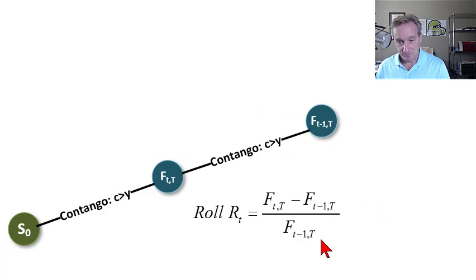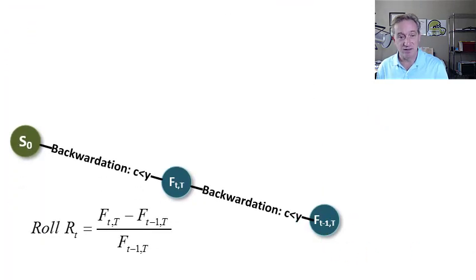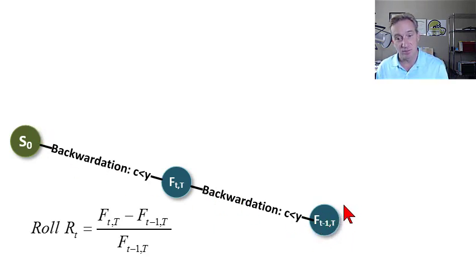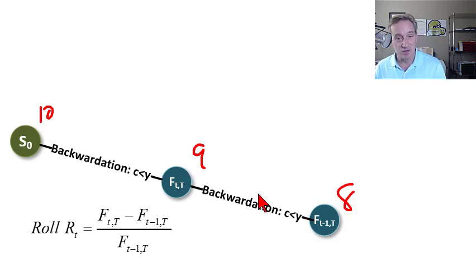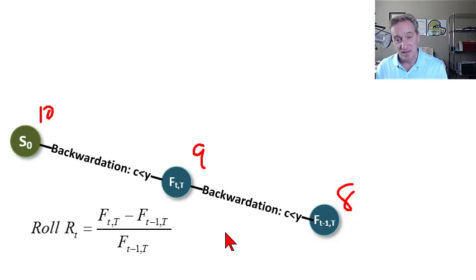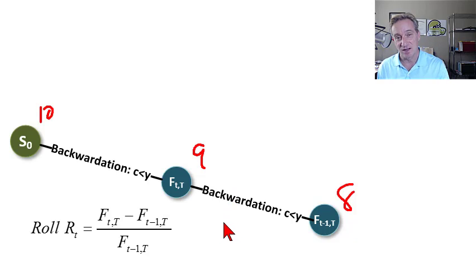Similarly, under a backwardation, it's the opposite — at least for a long. In backwardation with prices of $10, $9, and $8, we buy the two-month contract at $8; it becomes a one-month contract, and we close it out by entering a short position for a plus-one gain. So for the long position in backwardation, there's a positive roll return or positive yield — though a short will experience a loss. The roll return is the other key feature we associate with contango and backwardation.